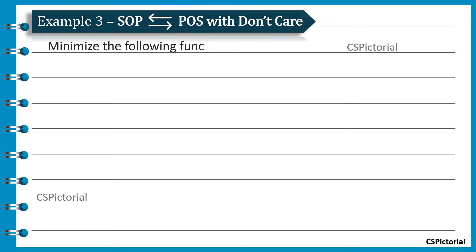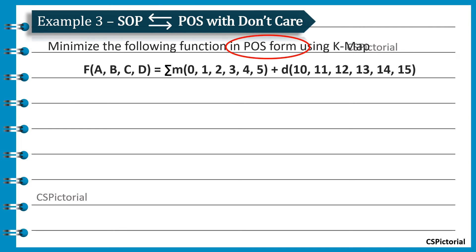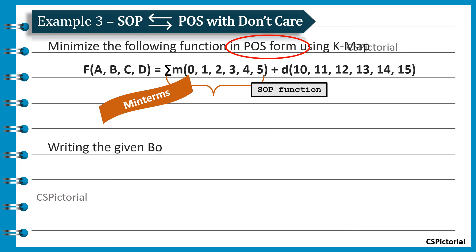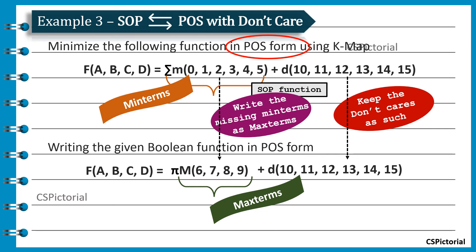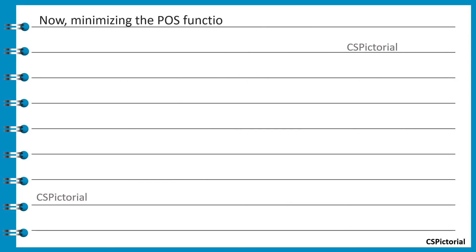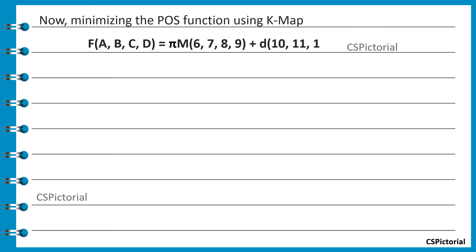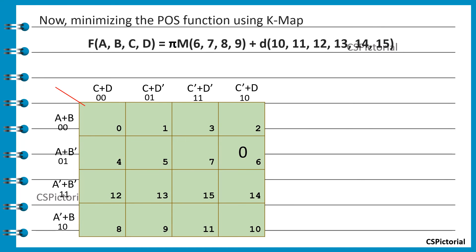This is another interesting example. Here, we need to find the final simplified expression in POS form, but the given boolean function is in SOP form and specifies the min terms. We could easily derive the boolean function in POS form: just keep the don't cares as such and write the missing min terms as the max terms. Now we start minimizing the POS function using KMAP with the same simple steps: fill up zeros in the blocks of the KMAP respective to the max terms and place x in the blocks respective to don't care. Try making larger groups including don't care cells wherever possible.